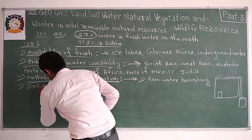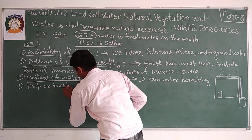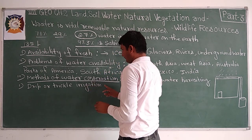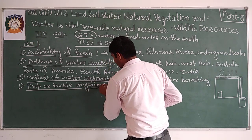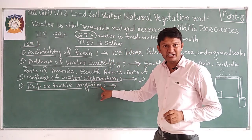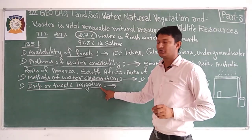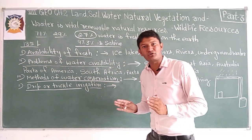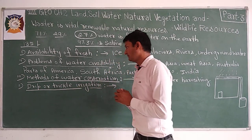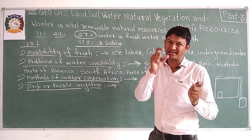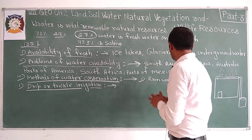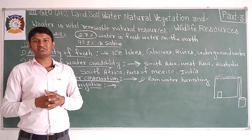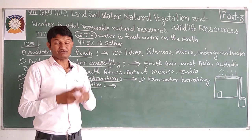The next method is drip or trickle irrigation. Irrigation is essential for farming activities, especially in dry region areas. This method is very suitable and helpful. In Rajasthan, farmers have adopted drip irrigation — also called trickle irrigation — to irrigate their fields and conserve water.